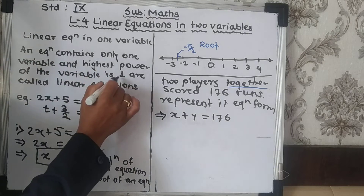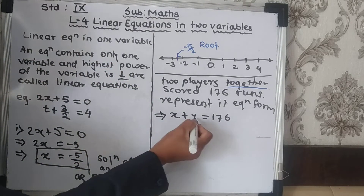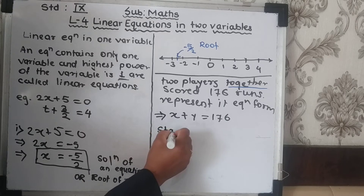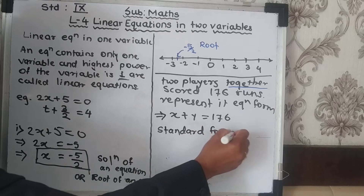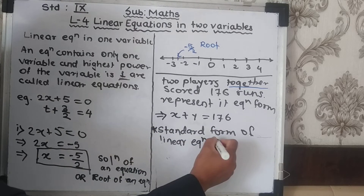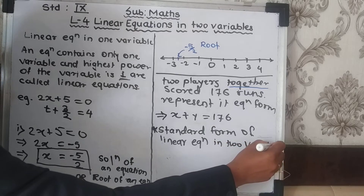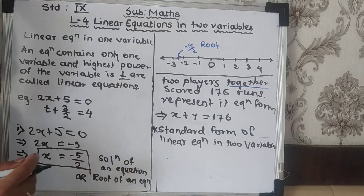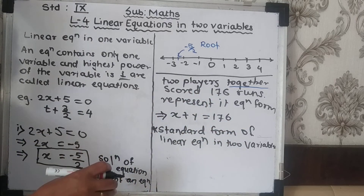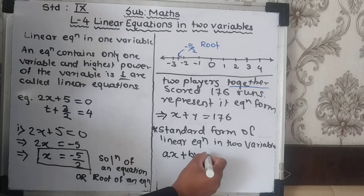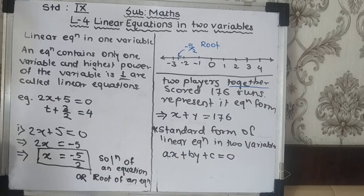Let us look at the standard form of a linear equation in 2 variables: ax + by + c = 0. This is the standard form, where a, b, c are real numbers.